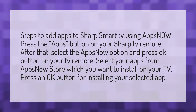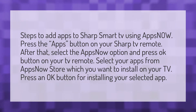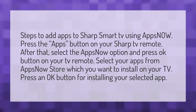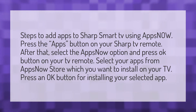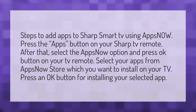Press the Apps button on your Sharp TV remote. After that, select the Apps Now option and press the OK button. Select the app from the Apps Now store which you want to install on your TV, then press OK to install your selected app.